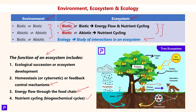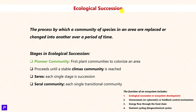We also have Nutrient Cycling or Biogeochemical Cycles, where a nutrient is recycled in the ecosystem. For example, carbon dioxide is absorbed by plants, and through photosynthesis, it produces starch or carbohydrates consumed by the primary consumer. During respiration, the primary consumer releases carbon dioxide, recycling the carbon. Various other nutrients are recycled similarly, and we will study these in future videos under Nutrient Cycling.